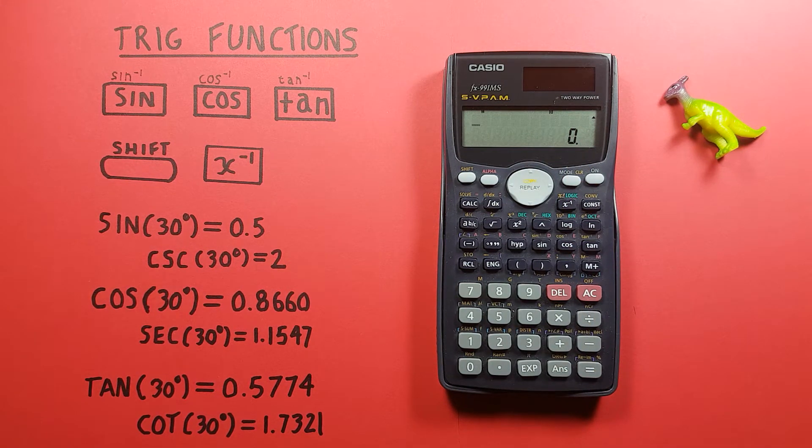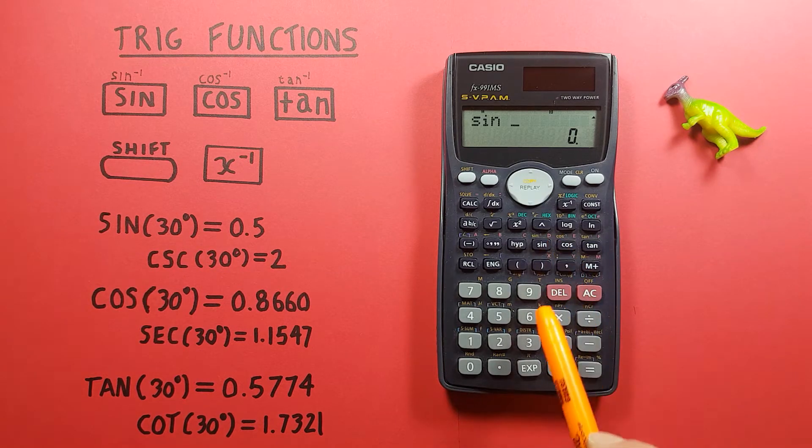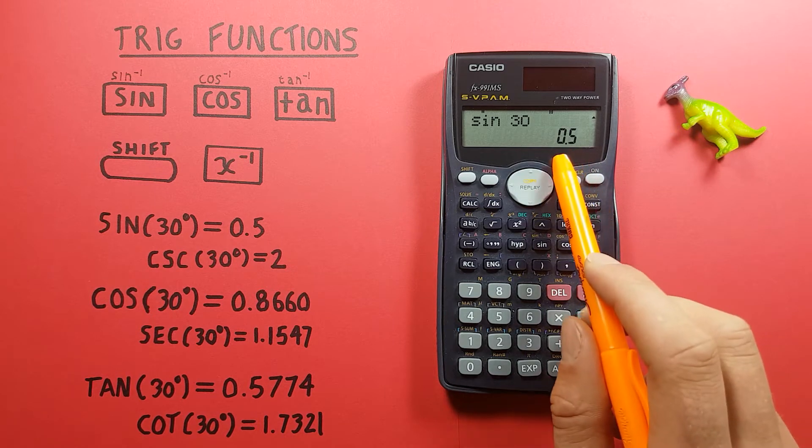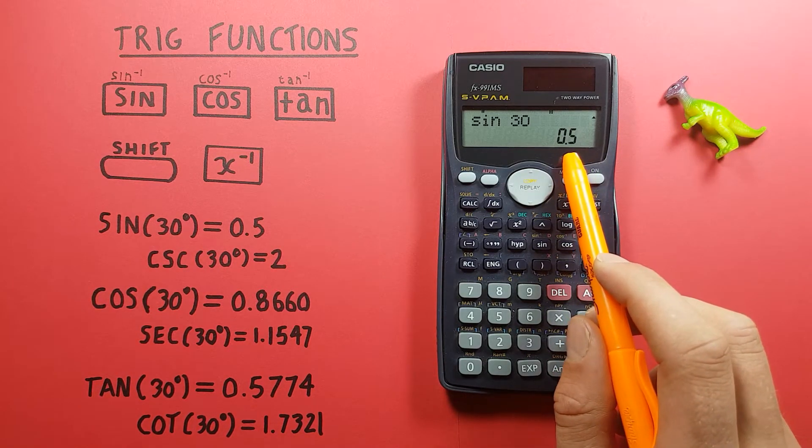Alright, if we're just doing the basics like the sine of 30 degrees, we would enter it as we would write it. So we press sine, 30 and equals gives us the result of 0.5.